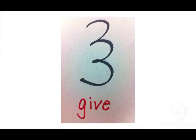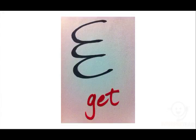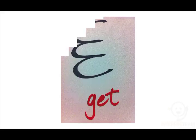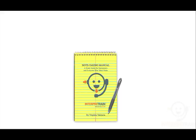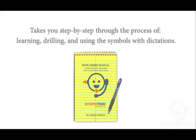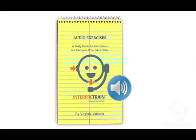Give, represented by a hand open to the right. Get, represented by a hand open to the left. To study these symbols, you can use Interpretrain's note-taking manual, which takes you step by step through the process of learning, drilling, and using the symbols with dictations to learn them by heart. You can also use Interpretrain's audio exercises, which contain the manual's dictations and are available on CD or for digital download at our website.